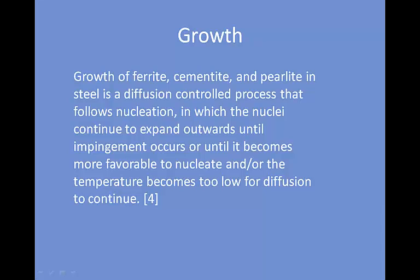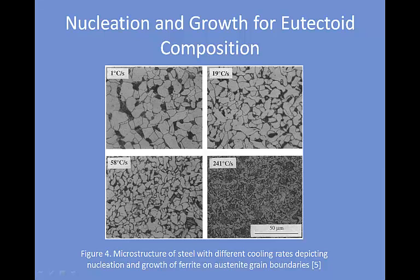For eutectoid composition, the ferrite and cementite will form together in lamella. As growth begins, the ferrite lamella expands with the diffusion of carbon away from the ferrite, while the cementite expands together with the ferrite as the carbon diffuses toward the cementite. As the ferrite and cementite grow together, the austenite gradually depletes. For eutectoid composition steel, the ferrite and cementite form together without any pro-eutectoid ferrite or cementite. These initial nuclei form, followed by their growth via diffusion and an undercooling driving force. The lamella form in layers, and the nuclei eventually form into spheres that grow until impingement stops them, or until diffusion becomes no longer possible due to too low a temperature.